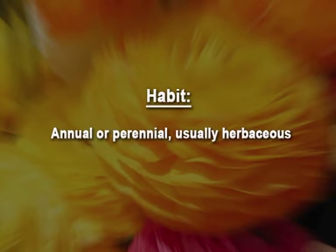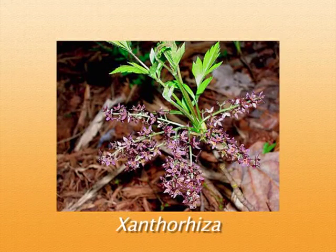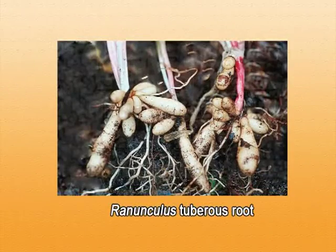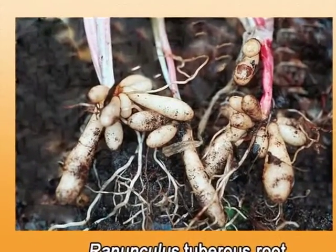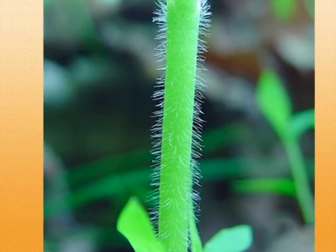Starting from its habit, Ranunculaceae is mostly annual or perennial in its life cycle and usually herbaceous, but some members are woody climbers, as is true for the genus Clematis, or sometimes it can be a shrub, as is the case for Xanthorhiza. Coming to the root, it has a tap root system which is always branched, or sometimes it can be tuberous. The stem is aerial, erect, and smooth-surfaced, scattered or having several rings of vascular bundles.